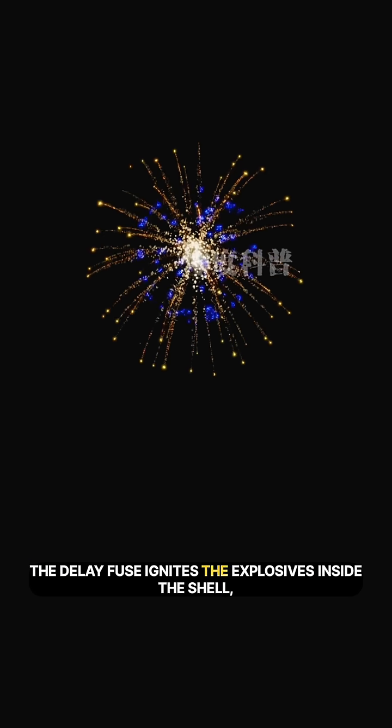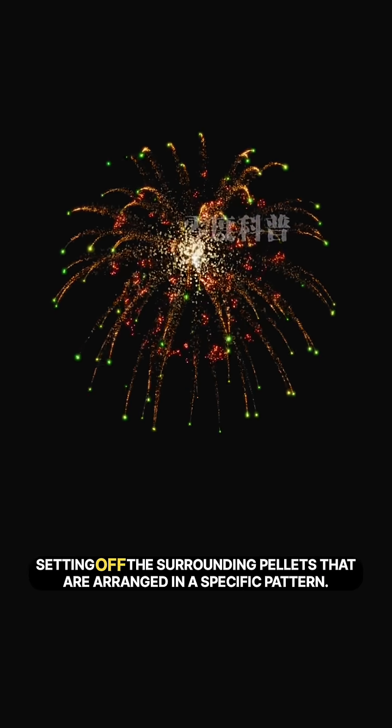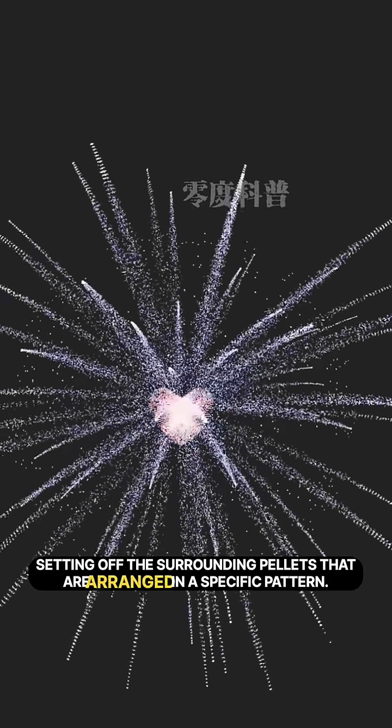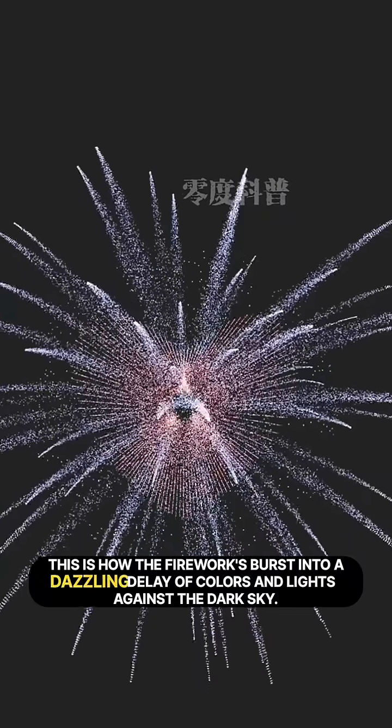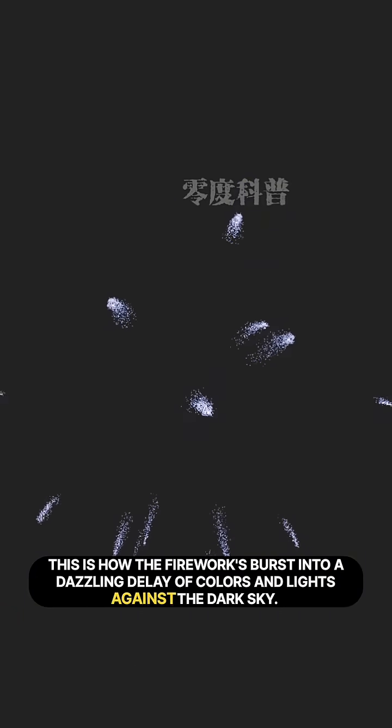Once it reaches a certain height, the delay fuse ignites the explosives inside the shell, setting off the surrounding pellets that are arranged in a specific pattern. This is how the fireworks burst into a dazzling array of colors and lights against the dark sky.